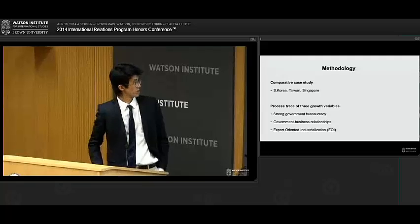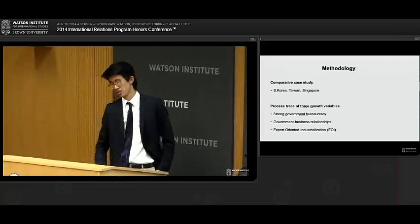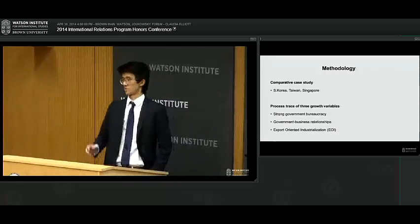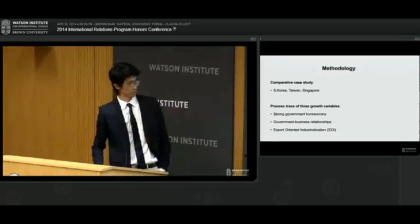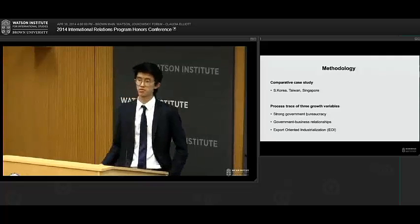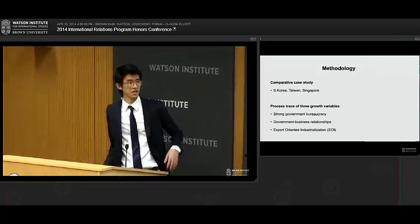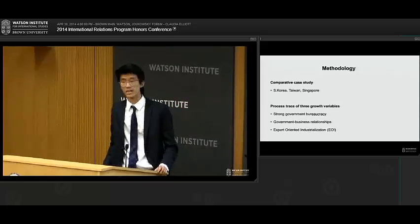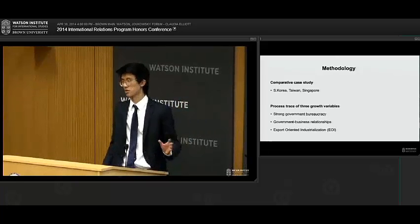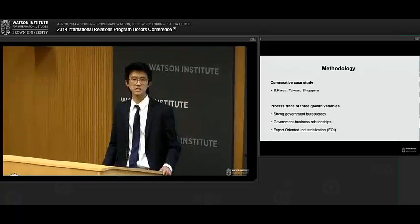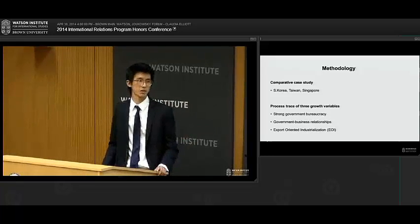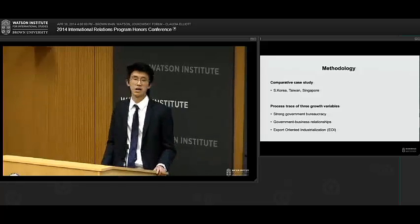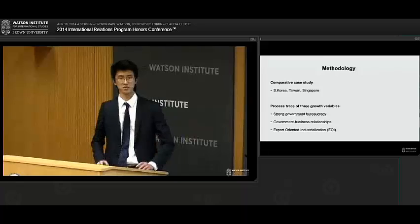These three growth variables are strong government bureaucracy, government business relationships, and export-oriented industrialization. Now, I'm going to go in a bit more detail about what each of them mean. But before that, I want to preface by saying that there's one big assumption in these variables, and that is that the state can drive growth. Now, this is in direct contrast to classical or neoclassical economic theory that argues for private enterprise driving growth.